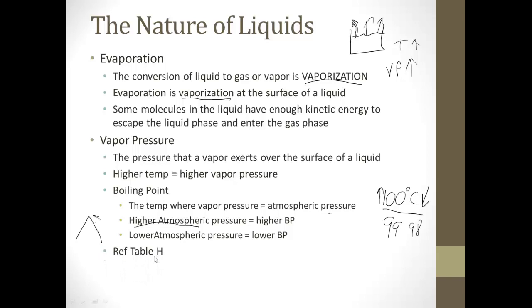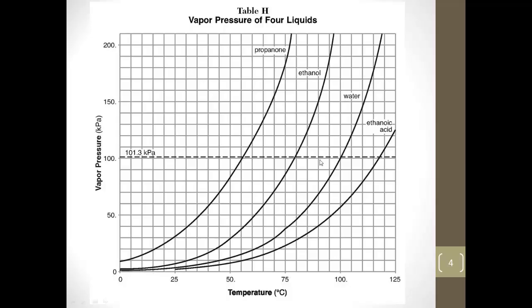Now, the vapor pressure is going to be on reference table H. Let's take a quick look at that. So here we can see the x-axis has temperature, the y-axis has vapor pressure, and we can see corresponding vapor pressure versus temperature for propanone, ethanol, water, and ethanoic acid. At pretty much any given temperature, like 75 degrees Celsius, propanone has the highest vapor pressure of these four, ethanoic acid has the lowest, and water and ethanol are in between.